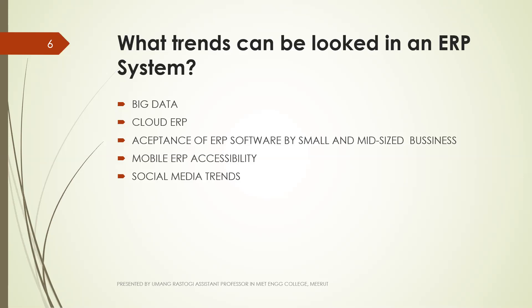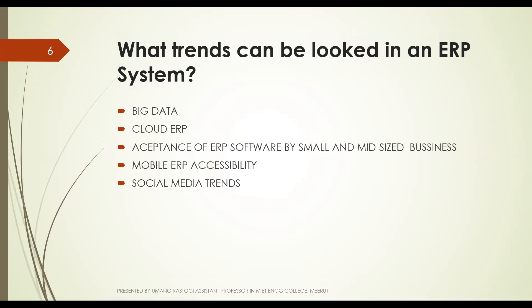The first trend is big data. Organizations have become more dependent on IT and have aggregated large amounts of information. By using analytical devices, organizations can start to utilize this information to make accurate forecasts that will help in proposing business strategy.